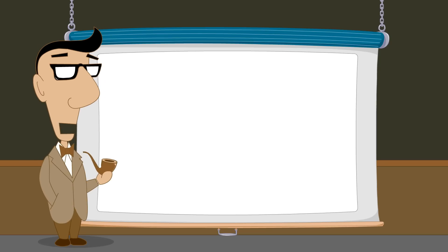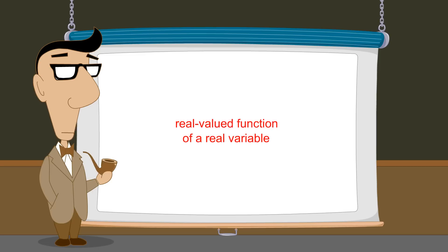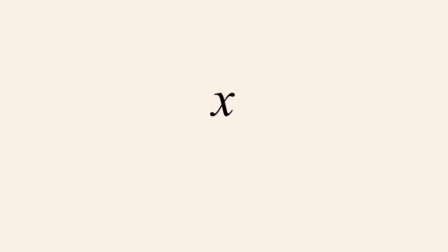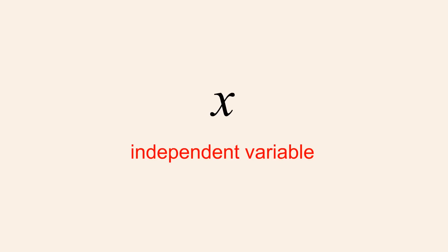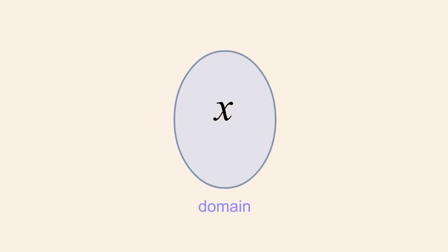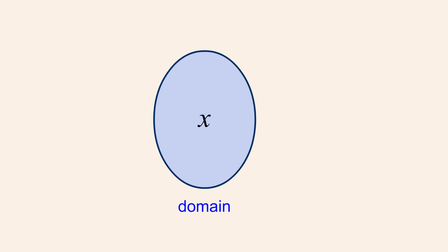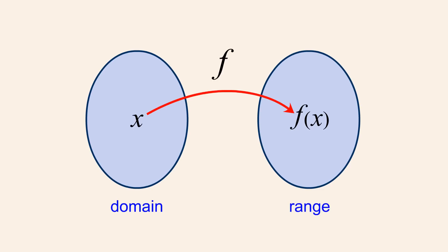In algebra, these input and output values are typically real numbers. In this case, we say that f is a real-valued function of a real variable. We saw that the input variable x is called the independent variable since its value does not depend on any other variable. The independent variable can take on any input value which the function is capable of processing. The set of all valid input values is called the domain of the function and the set of output values which the function produces from x is called the range of the function.